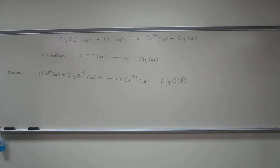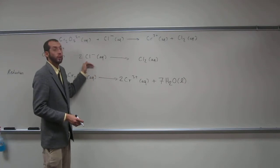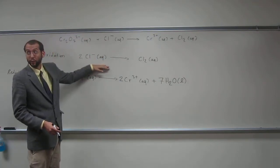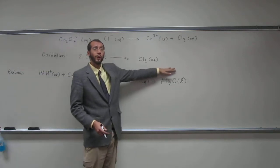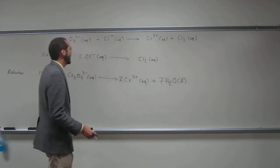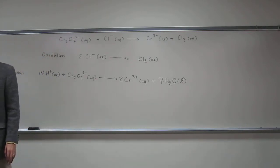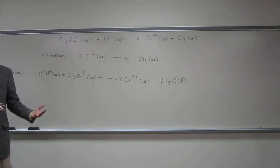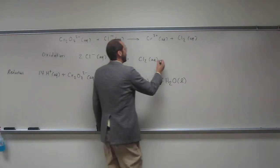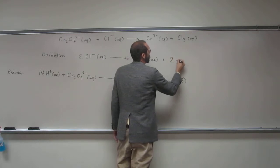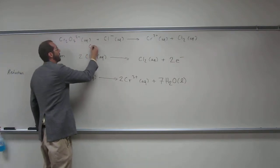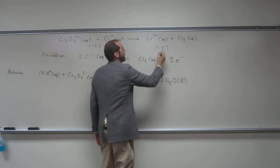The last thing we have to do with these half-reactions is balance the charge. Remember, when you have a charge on one side of the reaction, you have to have the same charge on the other side. So hopefully you see on this side we have a negative two charge, but on the other side we don't have a charge at all. So in this case, to give ourselves a negative two charge, we're going to add two electrons. Now hopefully you see we've got a negative two charge on both sides.